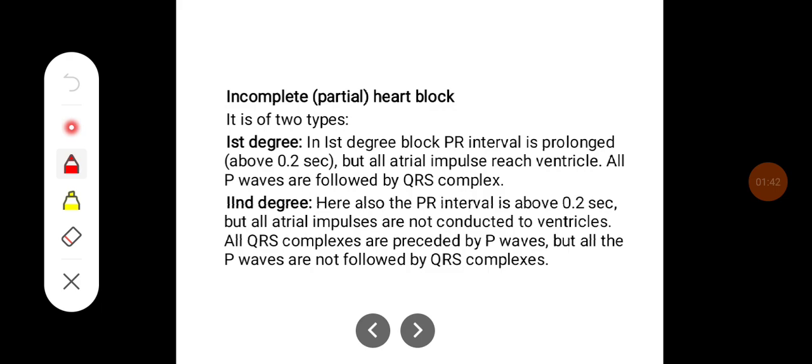Incomplete heart block are of two types: first degree heart block and second degree heart block. In first degree heart block the PR interval is prolonged, that is above 0.2 seconds, but all atrial impulses reach ventricle. All P waves are followed by QRS complex.